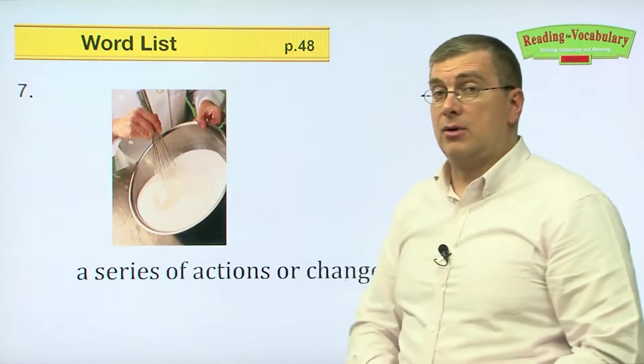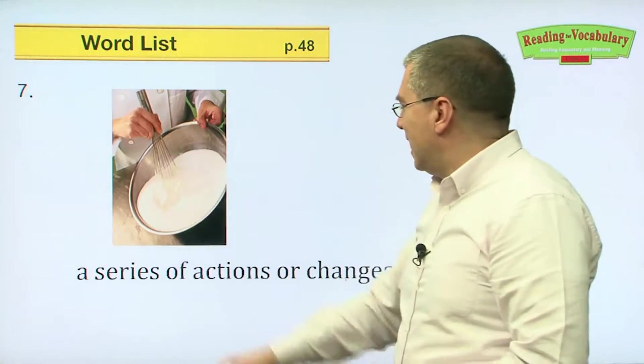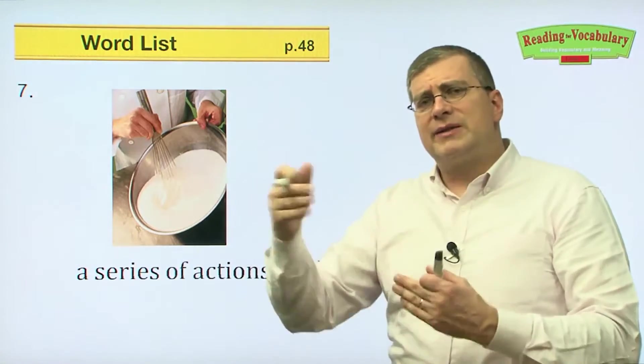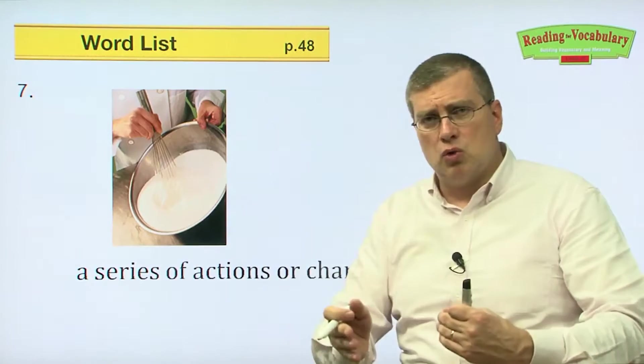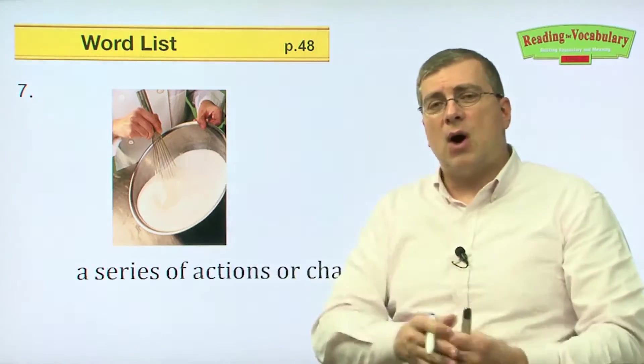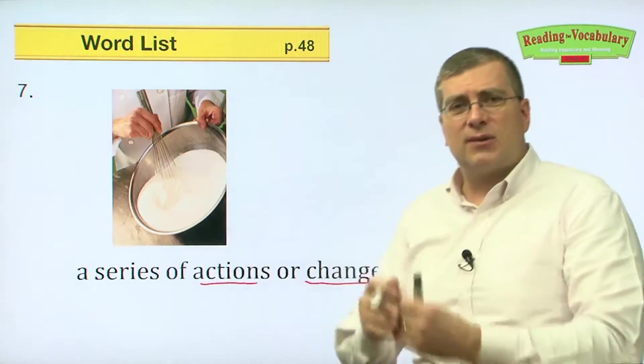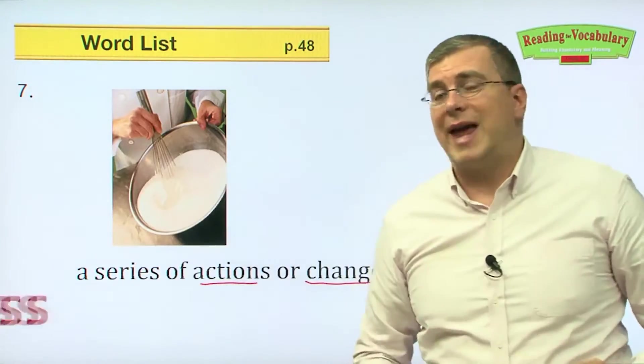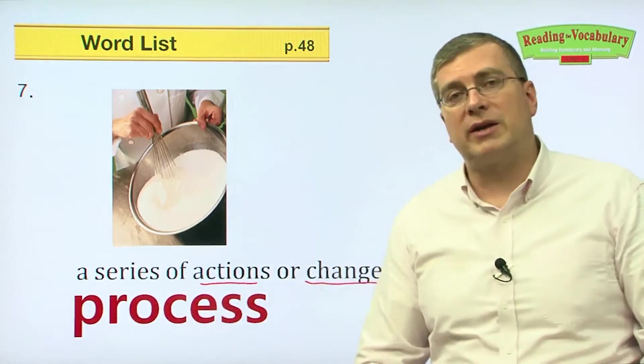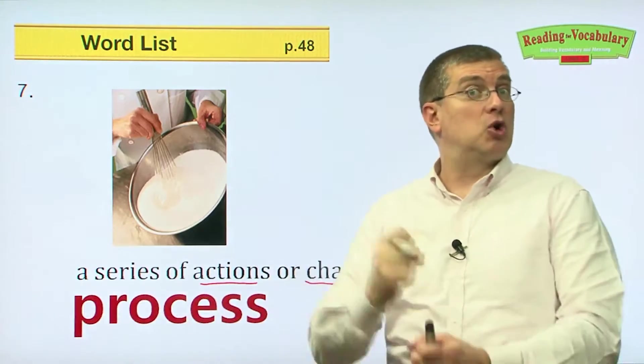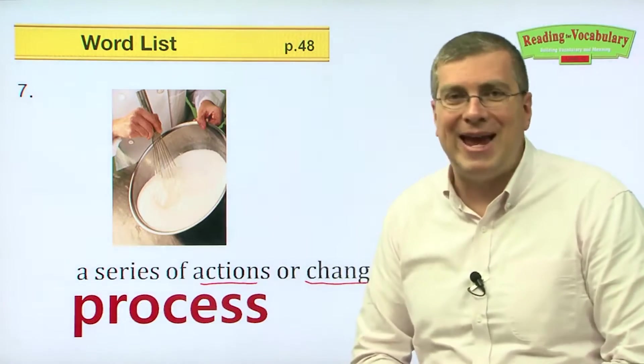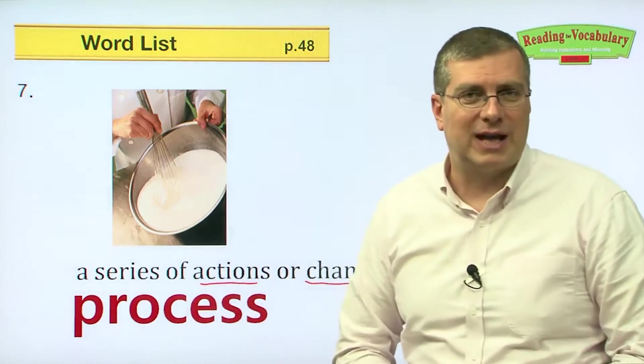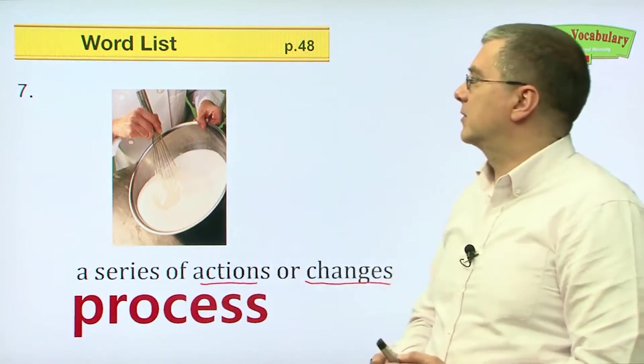Number seven. Are you hungry? Looks like somebody's cooking something. A series of actions or changes. When you cook something, you're doing a series of actions. Step one, step two, step three. You follow many actions or changes, different steps. We call all of those steps together, that's called a process. What is the process of making chocolate chip cookies? What is the process of making a pancake? You follow the different steps. Those steps are a process. How to do something.